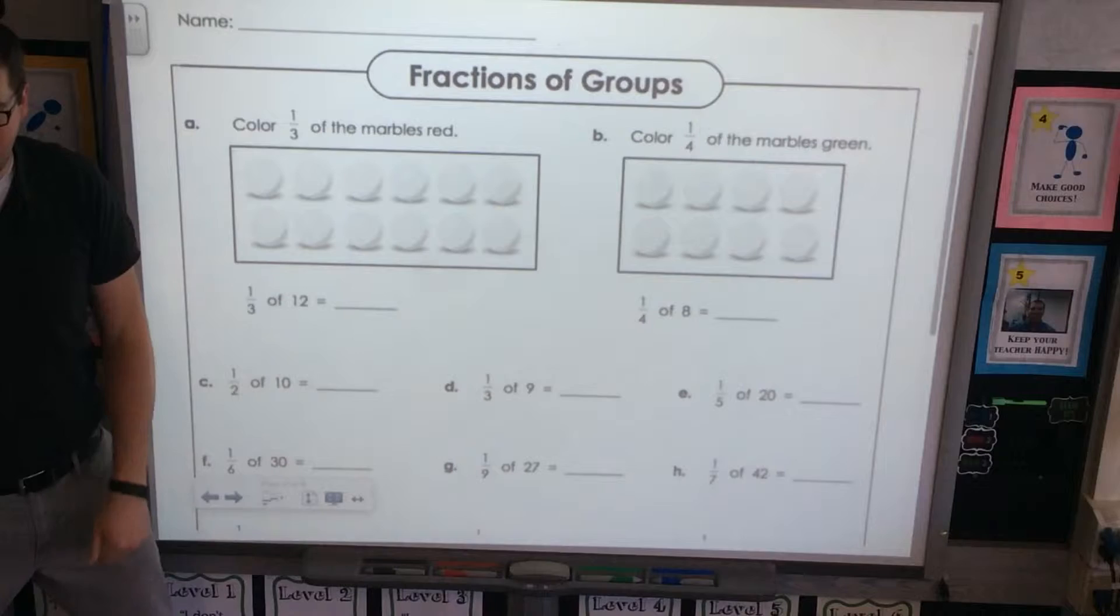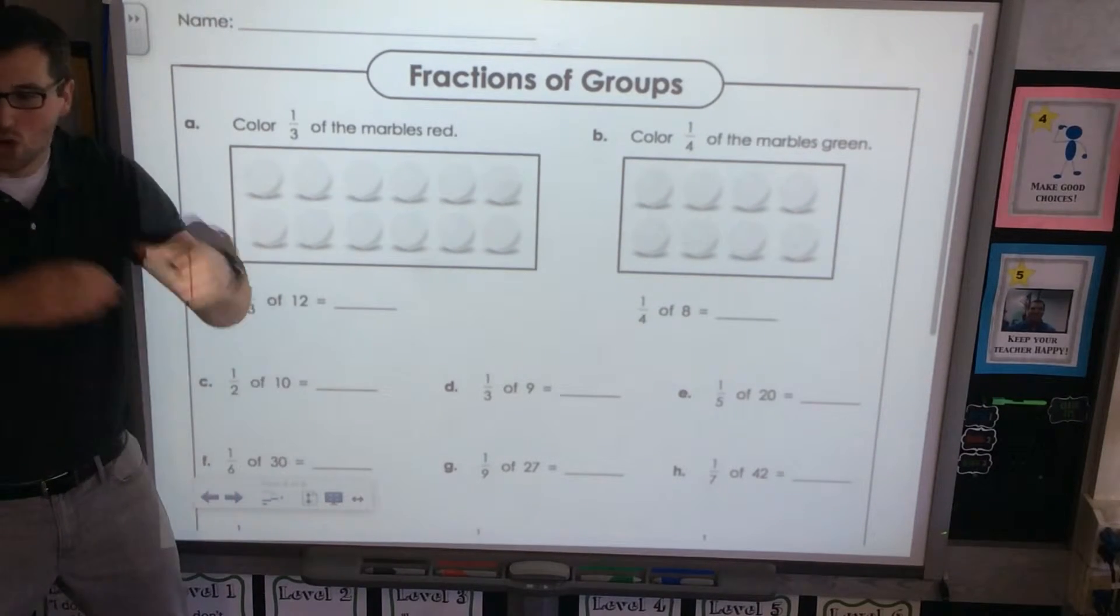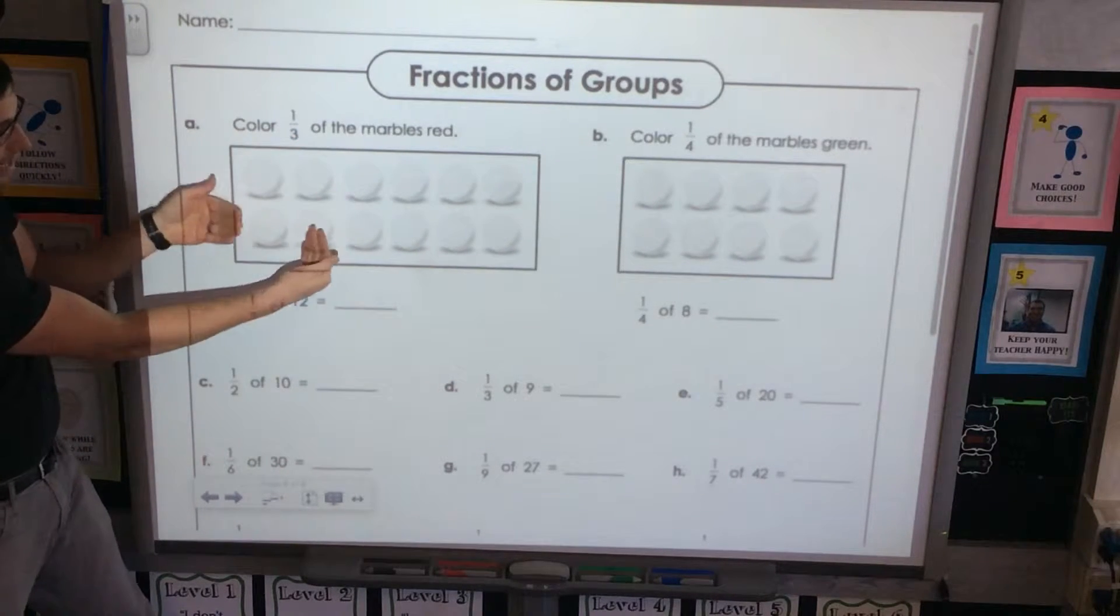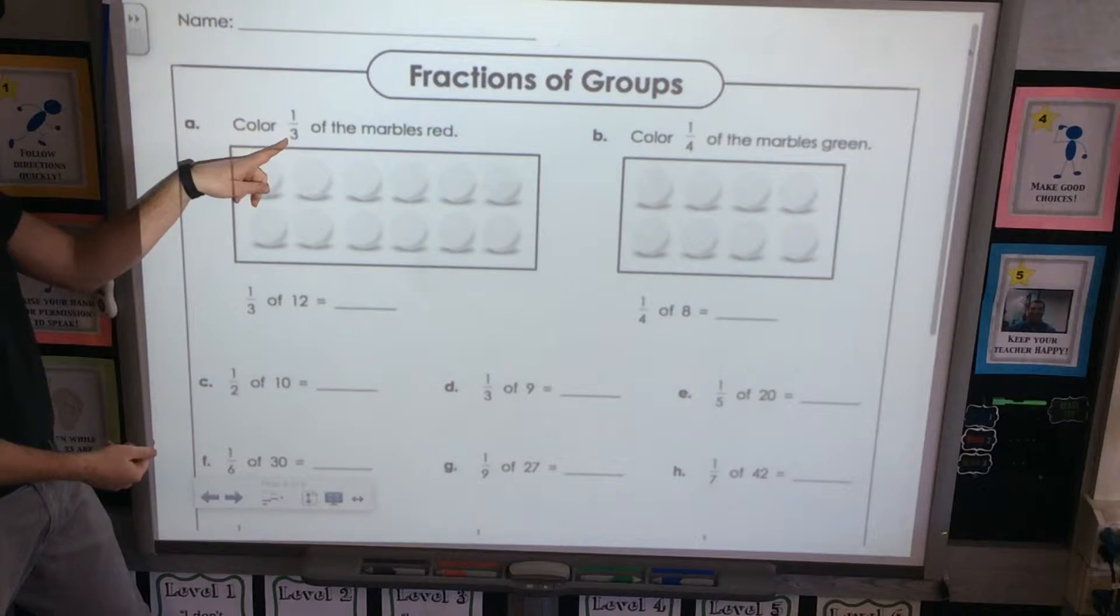What is a denominator? Ready, go. A denominator is how many equal parts in a whole. All right, so it's telling us we want to divide this up into three equal groups. Okay?